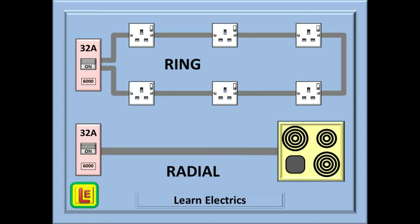Here is a familiar radial circuit: the electric cooker. The cable leaves the 32 amp breaker and goes to the cooker. When it gets to the cooker it stops.